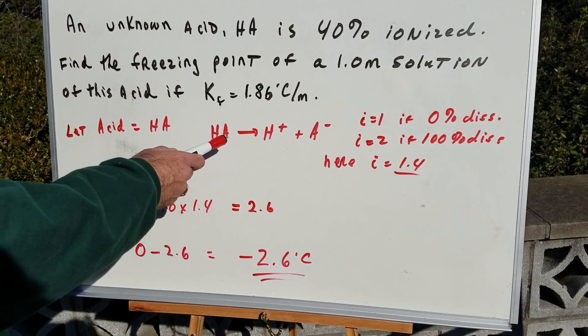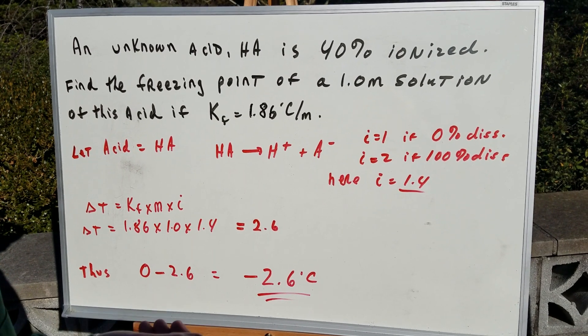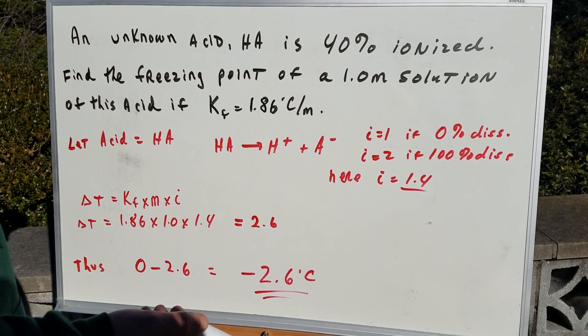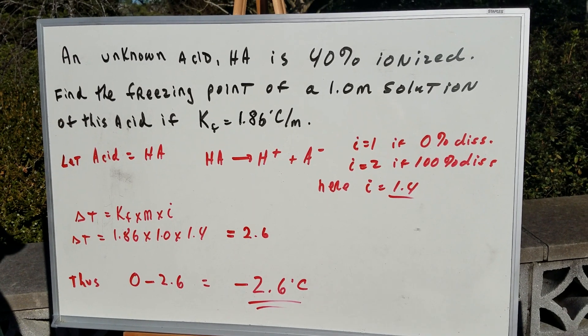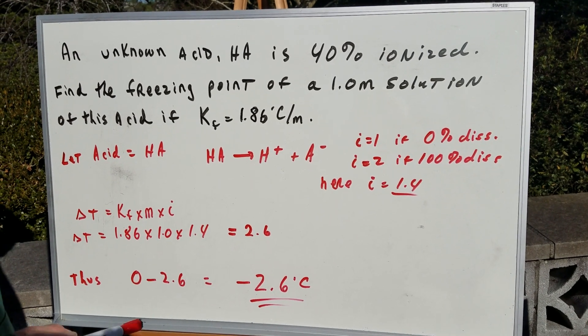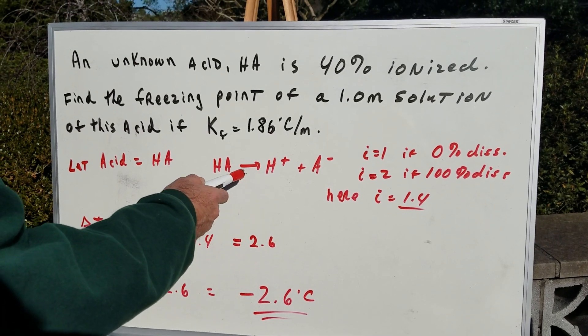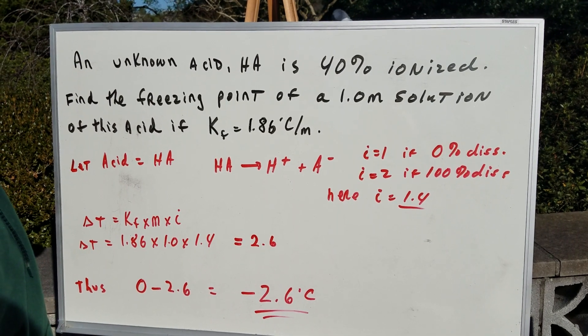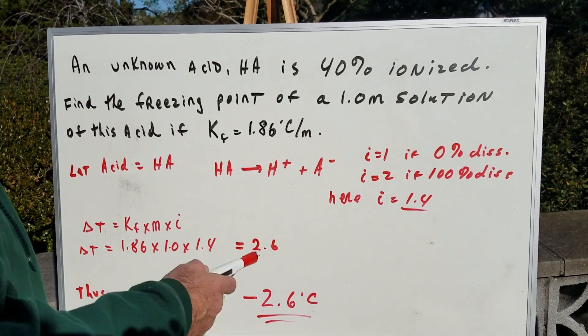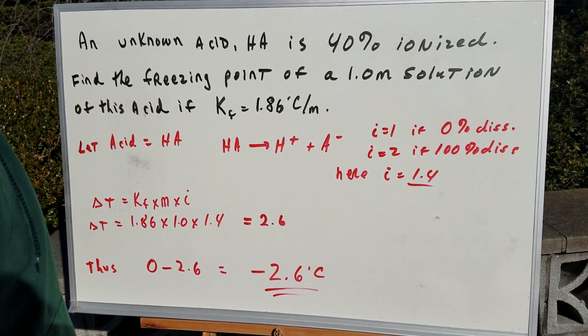Now, here's where the gimmick is. If you took HA and it didn't break up at all, and if there was 0% dissociation, then the i, which is the Van't Hoff factor, which is shown very nicely in the Destroyer book and explained to you, i would be equal to 1. If it broke up entirely, i would equal 2. That's assuming 100% dissociation. But here it was only 40% dissociated, so the gimmick is i is 1.4.